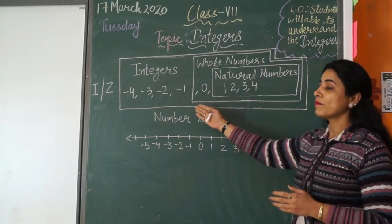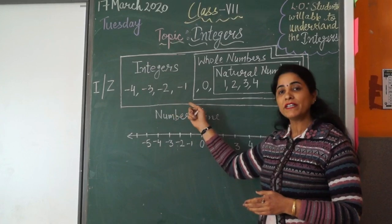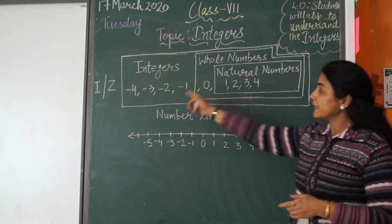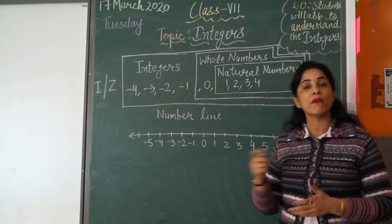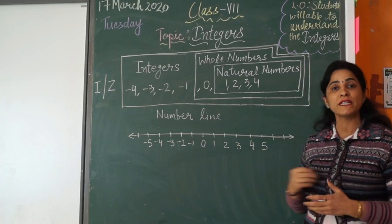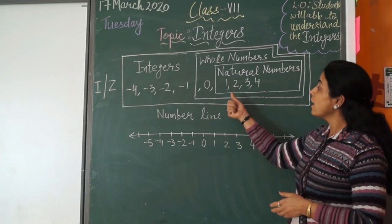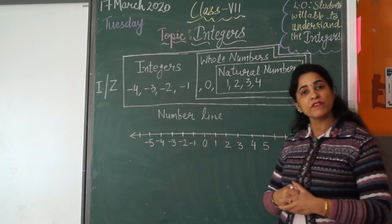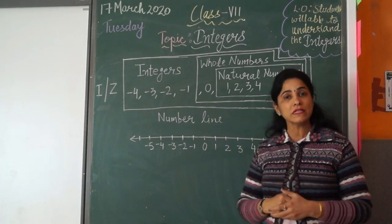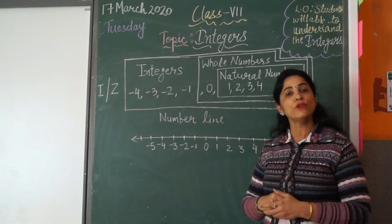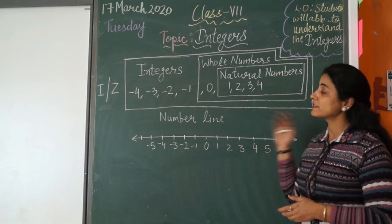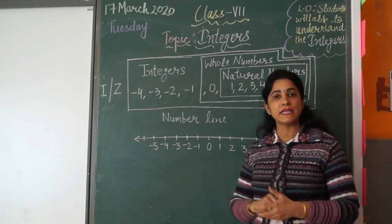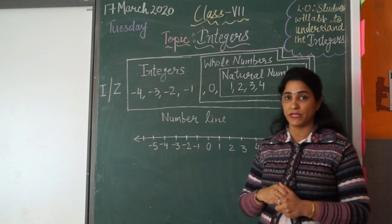An integer is a set of numbers where we have negative integers along with the whole numbers. Negative integers such as minus 4, minus 3, minus 2, and minus 1, while 1, 2, 3, and 4 are the positive integers. Zero is neither negative nor positive. An integer is represented by I or Z.